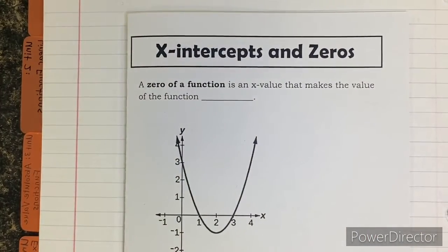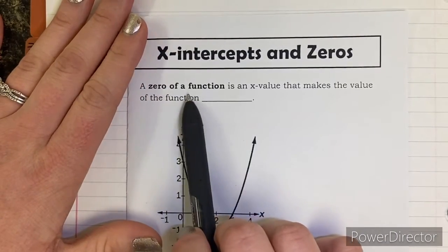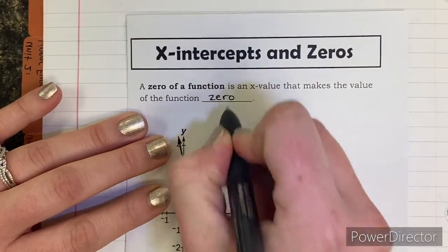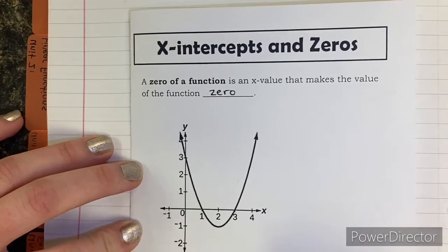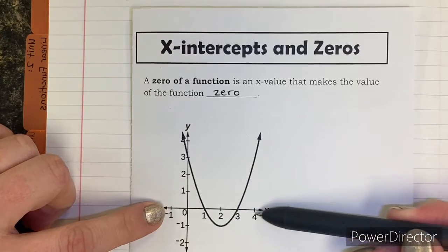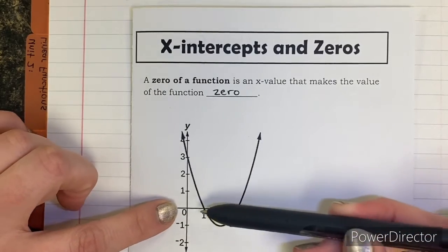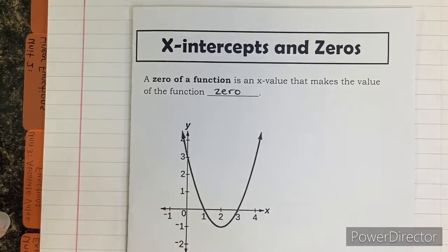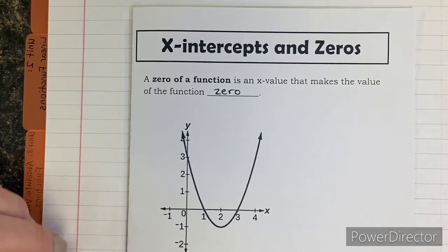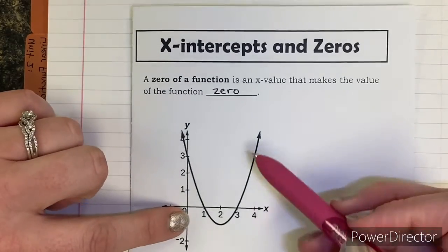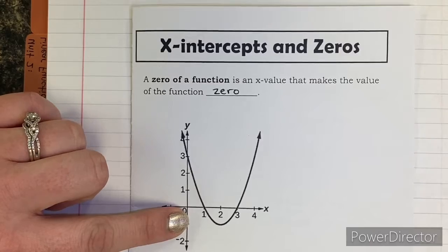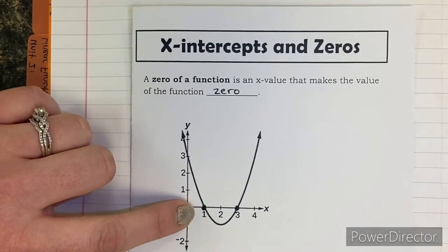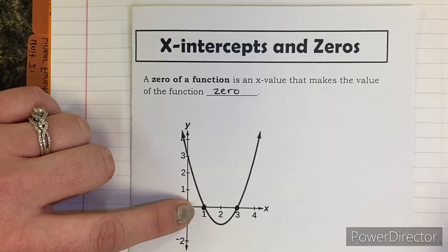First, we need to make sure that everybody understands what a zero is. A zero of a function is an X value that makes the value of the function zero. We're wanting to know when does the graph equal zero — that's talking about the X-axis. So we're looking for where does the graph cross the X-axis. When I look at this graph, we have two different spots where it actually happens, and these two points are called zeros and they're called X-intercepts.